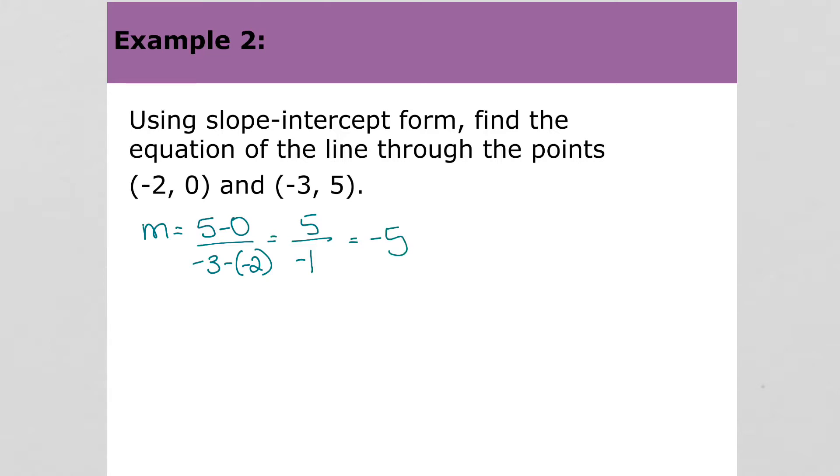We'll write the equation in point-slope form using this point. Y minus 0 equals the slope times x minus negative 2. Y minus 0 is just y. X minus negative 2 is x plus 2.